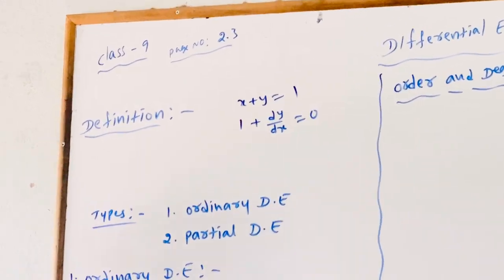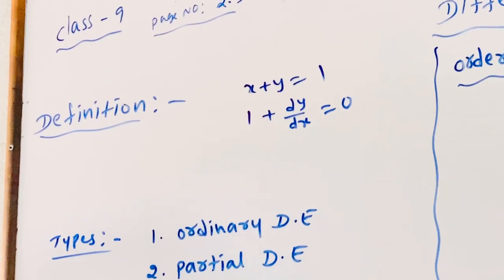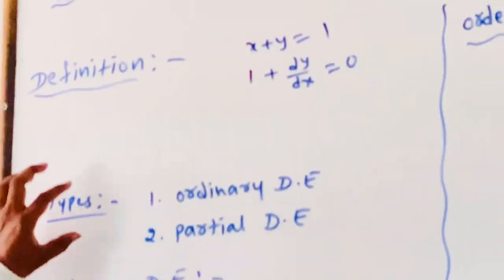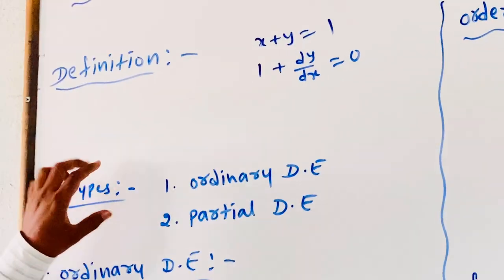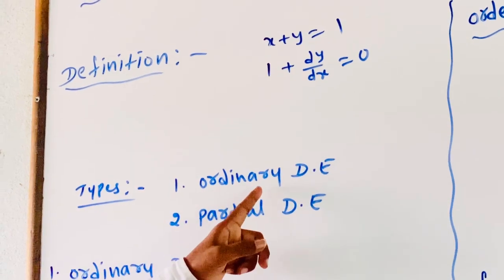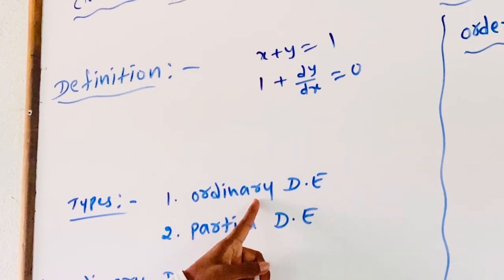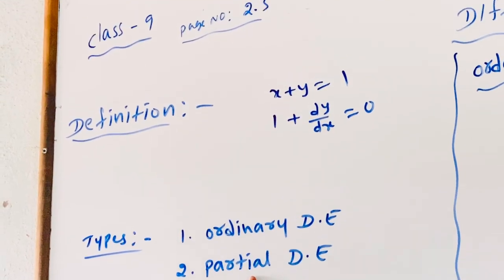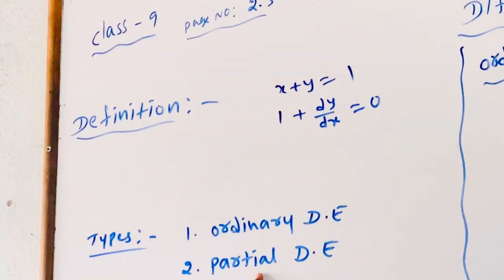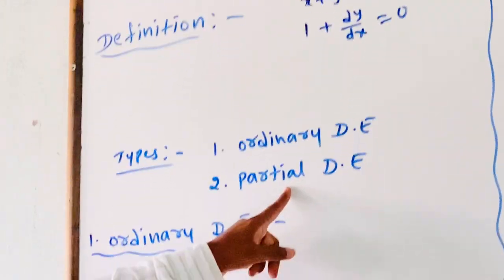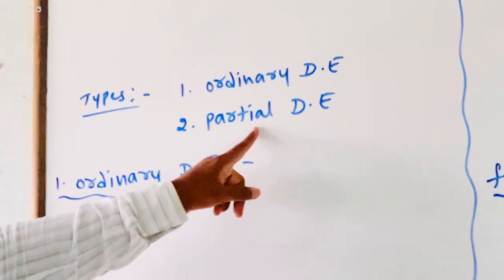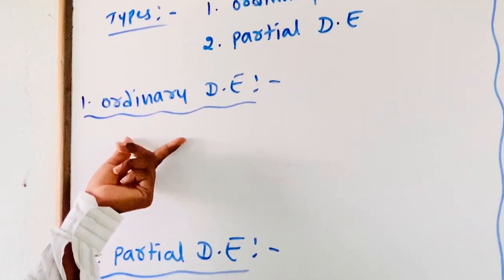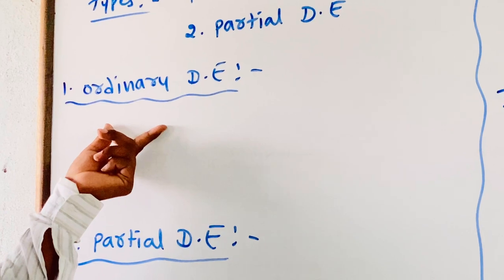Differential equations are generally classified into two types: one is ordinary differential equation and the second one is partial differential equation. We will discuss about ordinary differential equations.